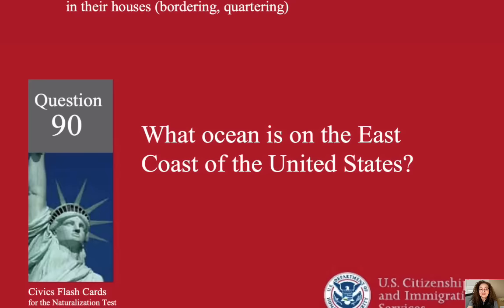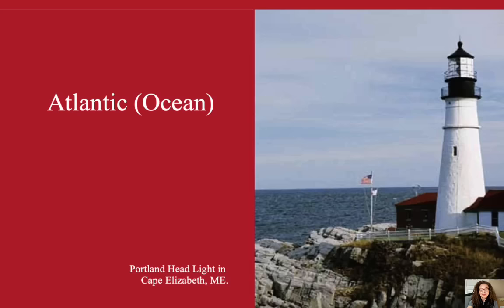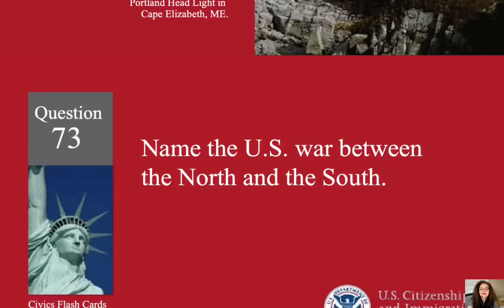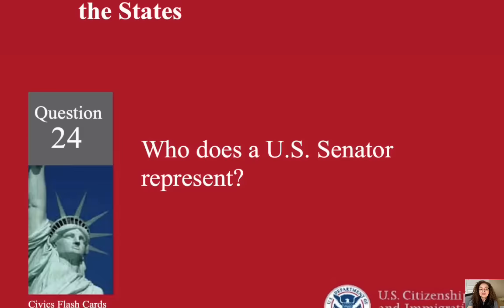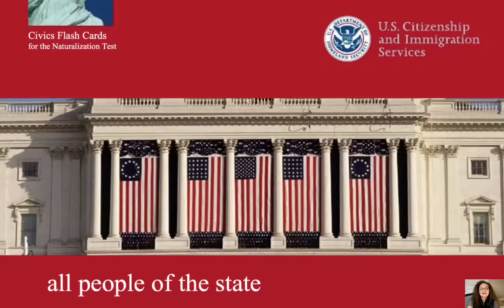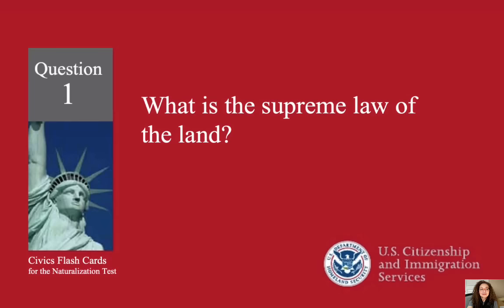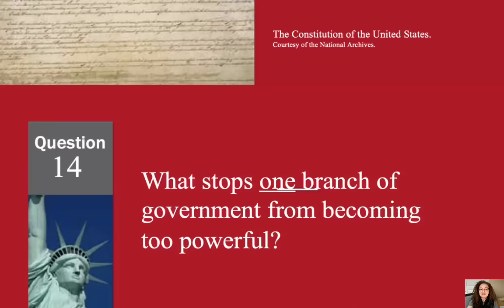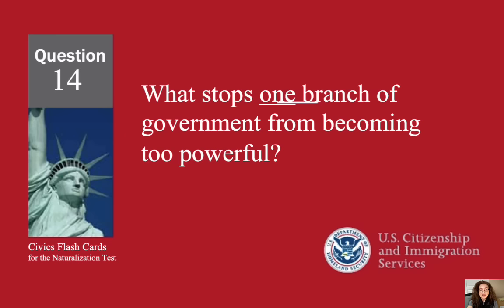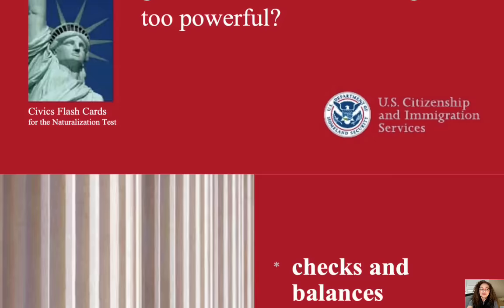What ocean is on the east coast of the United States? Atlantic. Name the U.S. war between the North and the South. The Civil War. Who does a U.S. senator represent? All people of the state. What is the supreme law of the land? The Constitution. What stops one branch of government from becoming too powerful? Checks and balances.